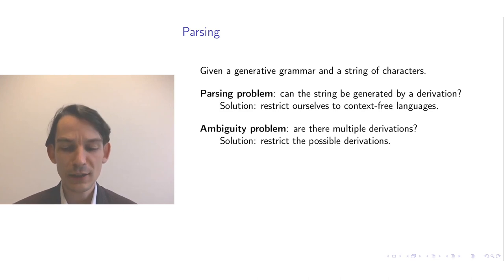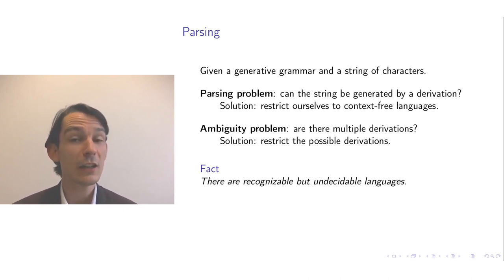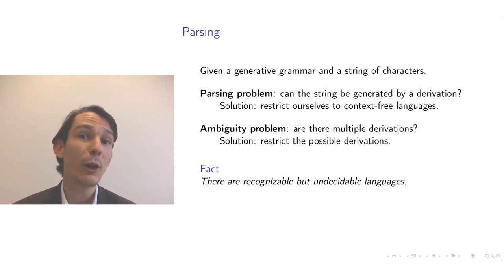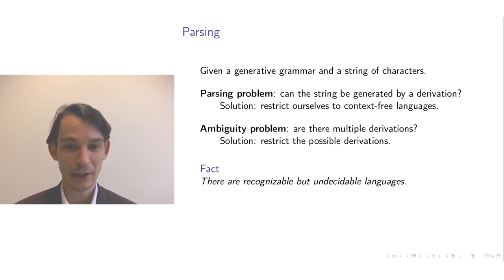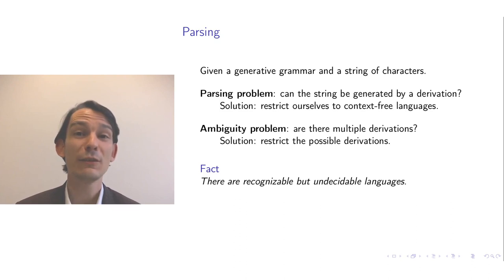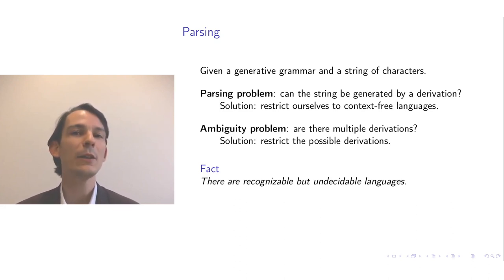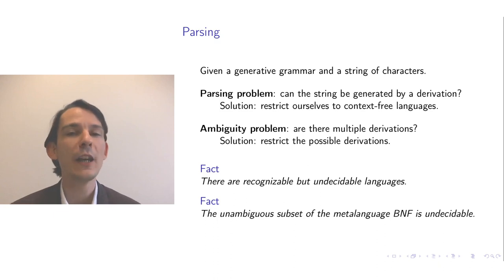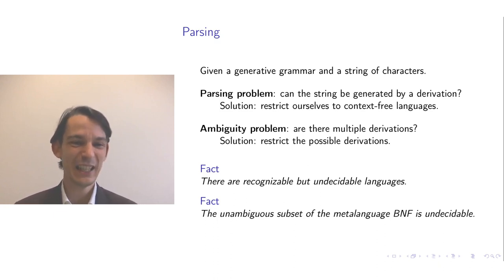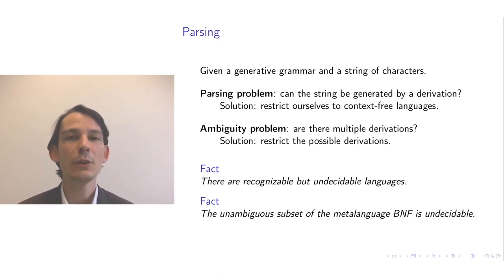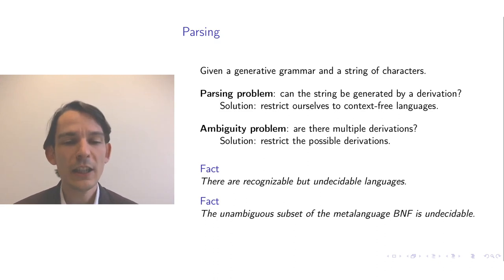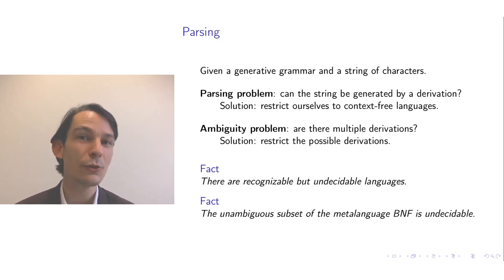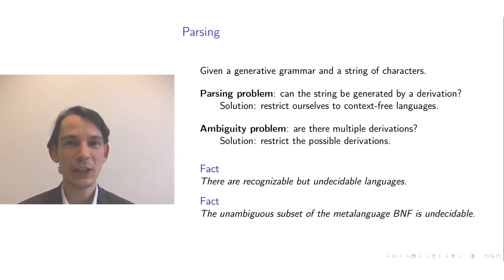As a fun reminder, keep in mind that there are recognizable but undecidable languages — if you want to write a parser that always terminates for those, you have bad luck. Also, even when you restrict yourself to context-free languages, determining whether the grammar is ambiguous itself is a difficult problem. More formally, checking whether a context-free language is unambiguous is undecidable. If you consider the meta-language of BNF, the subset of BNF that is unambiguous is itself undecidable.